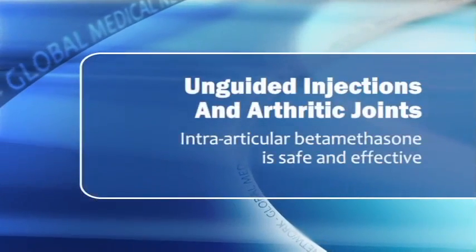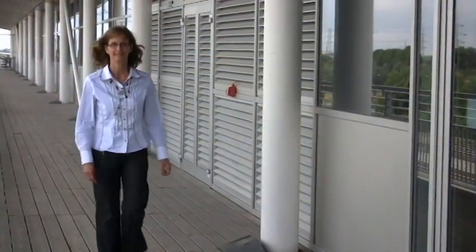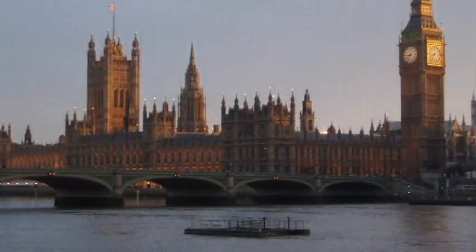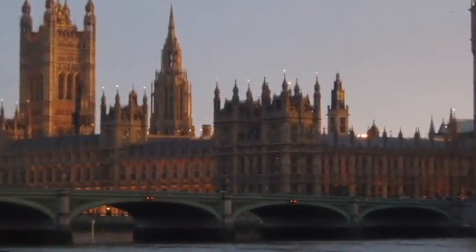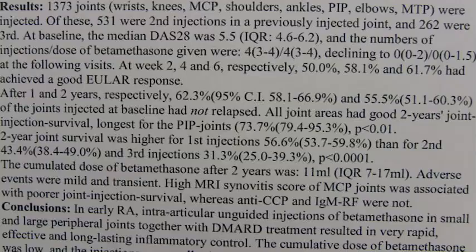Unguided intra-articular injections of beta-methasone are safe and effective for rheumatoid arthritis patients, according to Dr. Meret Hetland. Data from 160 patients presented at the annual European Congress of Rheumatology in London showed that nearly two-thirds of joints treated with unguided injections had not relapsed after two years.